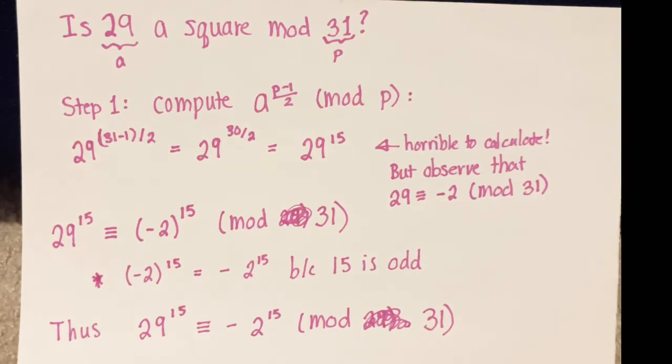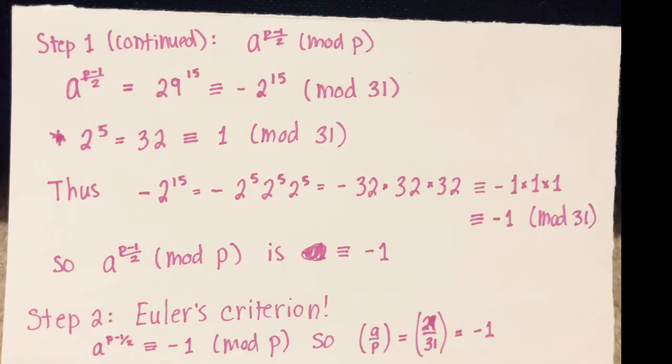So we can just replace 29 to the 15 with negative 2 to the 15 mod 31. This is what we'll evaluate instead, negative 2 to the 15 mod 31. And I want you to observe now that 2 to the 5th is equal to 32, and 32 is equal to 1 mod 31.